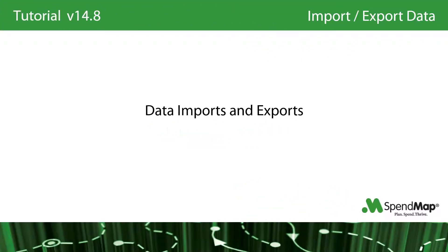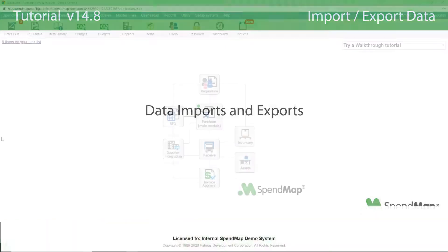In this tutorial, I'm going to review SpendMap's import and export utilities. SpendMap comes with about 30 or so built-in imports and exports, including the ability to import and export most of the system's master files, including suppliers, items, account codes, and many others. There are also many transaction interfaces as well, like the ability to export purchase orders, receipts, approved invoices, inventory usages, and so on.